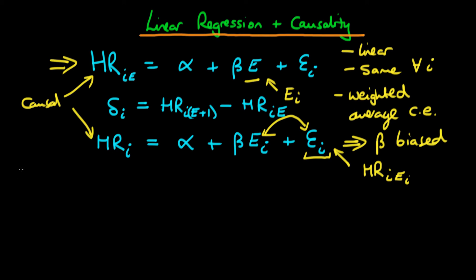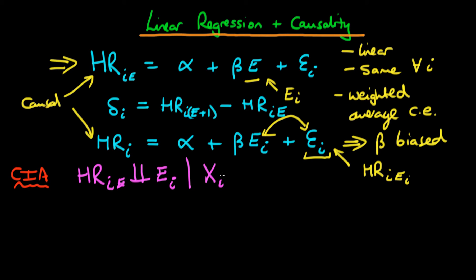One way to get around this problem is by using the conditional independence assumption. To restate it: the potential level of resting heart rate of individual I choosing exercise level E — note E, not E_I — is independent of the exercise level they actually choose, E_I, given a vector of covariates X_I.